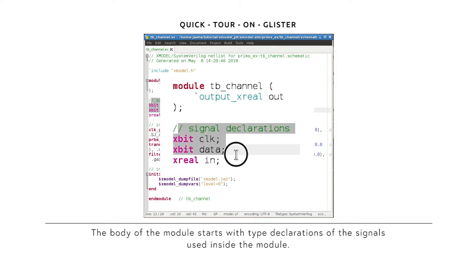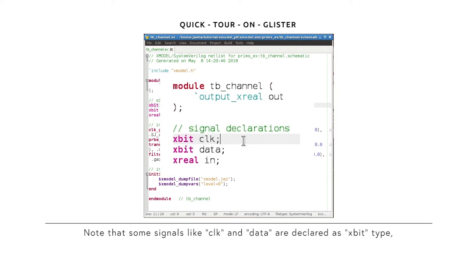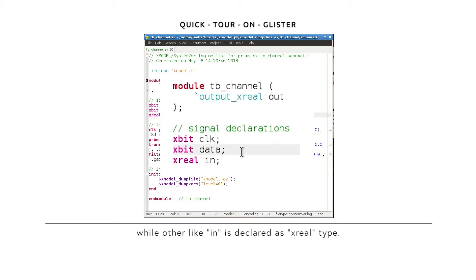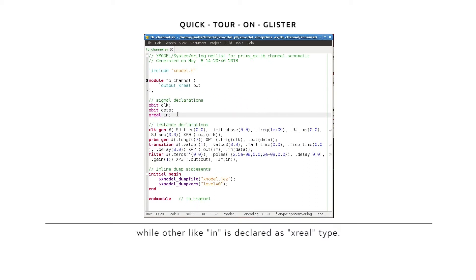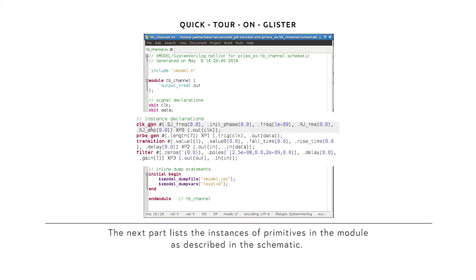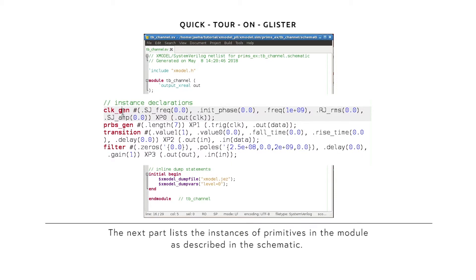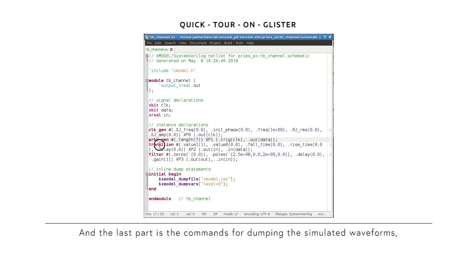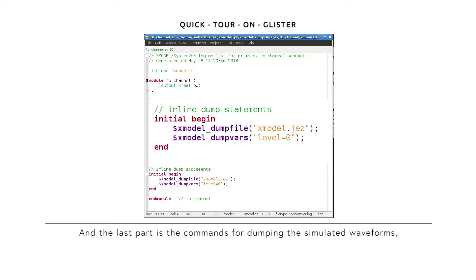The body of the module starts with type declarations of the signals used inside the module. Note that some signals like clock and data are declared as X-bit type, while others like in are declared as X-real type. Glister is capable of auto-detecting the types of the signals based on what they are connected to. The next part lists the instances of primitives in the module as described in the schematic. And the last part is the commands for dumping the simulated waveforms, which are included because we placed the dump primitive on the schematic.